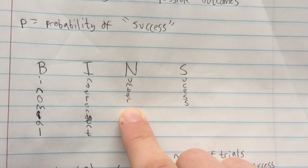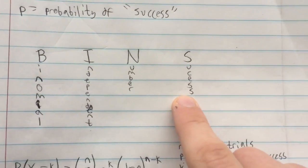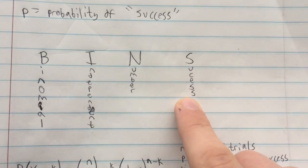It has to be a fixed number of trials, which we usually denote as N. And there has to be a fixed probability of success that doesn't change.